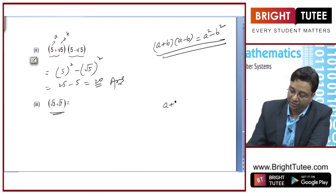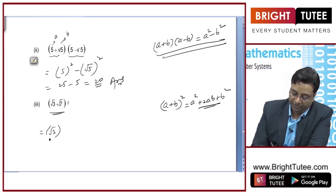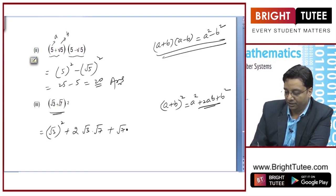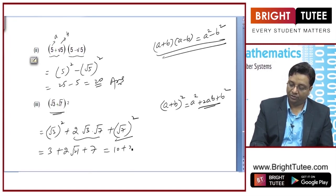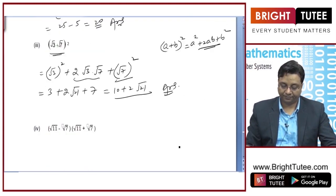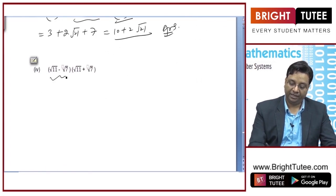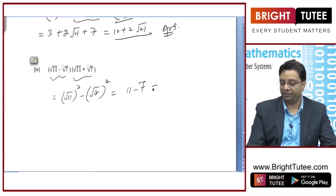In this case, the identity used is (A + B)² = A² + 2AB + B². Using this: (√3)² + 2×√3×√7 + (√7)² = 3 + 2√21 + 7 = 10 + 2√21, which is your answer. For the next one, it is again the (A - B)(A + B) form, so A² - B² = (√11)² - (√7)² = 11 - 7 = 4.